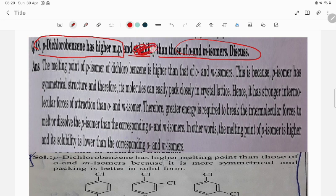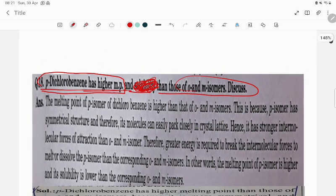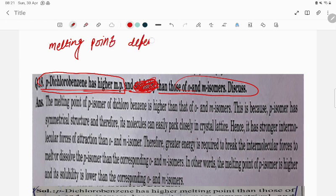The first part, leave the second part. Para chlorobenzene has higher melting point. I told you at the beginning, melting point depends on what factor?